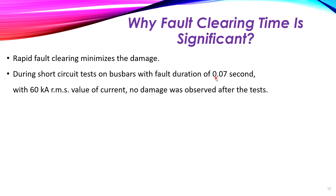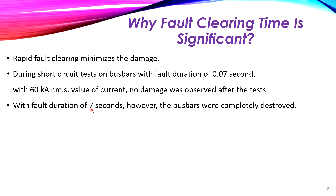During those 0.07 seconds, the relay and circuit breaker operated and cleared the fault. With 60 kilo-amperes at 0.07 seconds, no damage occurred to the bus bars. However, when the fault duration was allowed to reach seven seconds at the same 60 kilo-amperes, the bus bars were completely destroyed. This means we should clear the fault as soon as possible to prevent equipment damage.